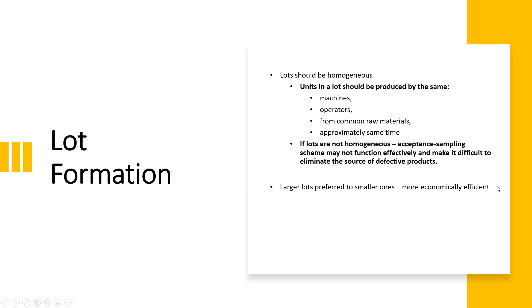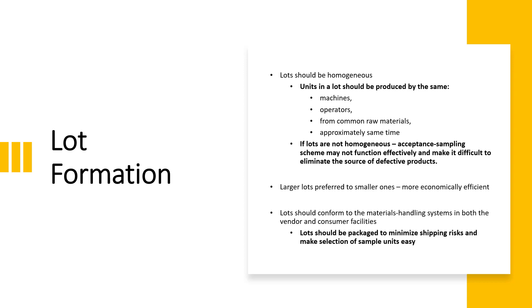Large lots are preferred over smaller ones as they are more economically efficient. In smaller lots the probability of defective items may be higher and the risk is greater. Lots should conform to the material handling system in both vendor and consumer facilities, and lots should be packaged to minimize shipping risk and make selection of sample units easier.